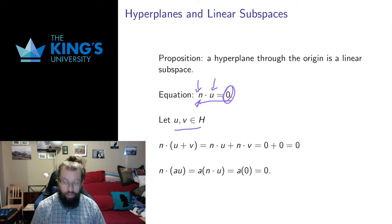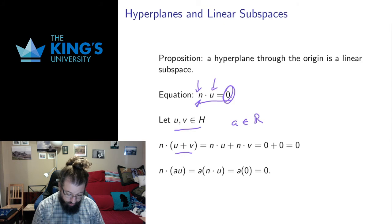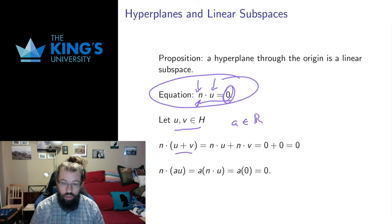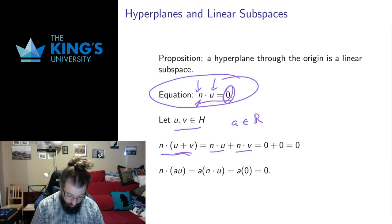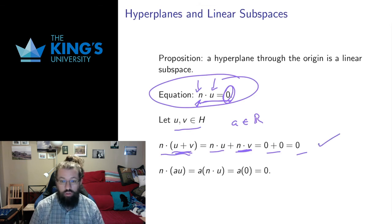Assume I have two vectors U and V in the hyperplane, and A is any real number. I want to consider the sum U+V and see if it satisfies the equation of the hyperplane n dot (U+V) = 0. Using the distributive property of the dot product from week 2, n dot (U+V) equals n dot U plus n dot V. Since U is in the hyperplane, n dot U equals zero. Since V is in the hyperplane, n dot V equals zero. So I get zero plus zero equals zero, which means U+V satisfies the equation and must be in the hyperplane.